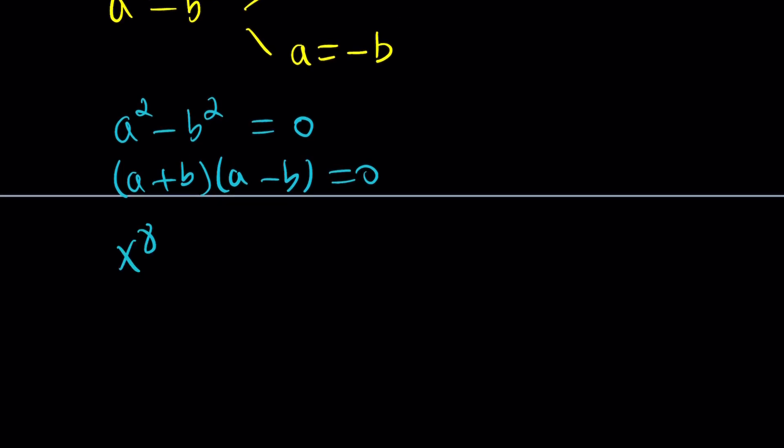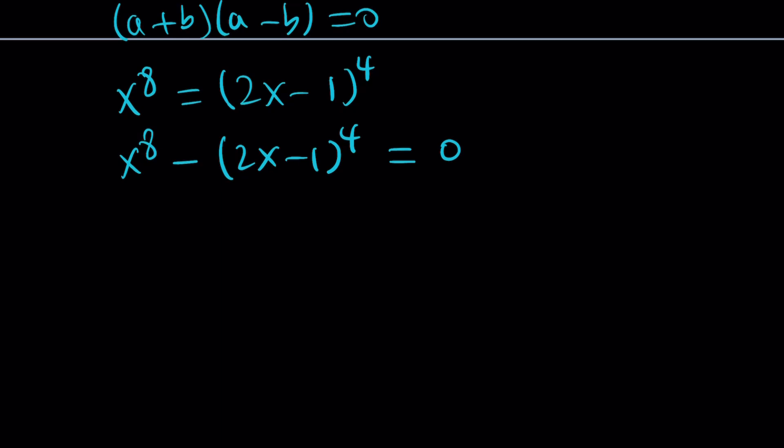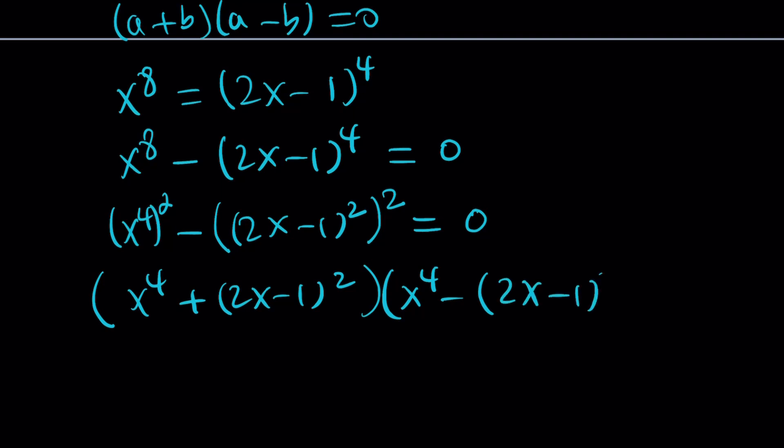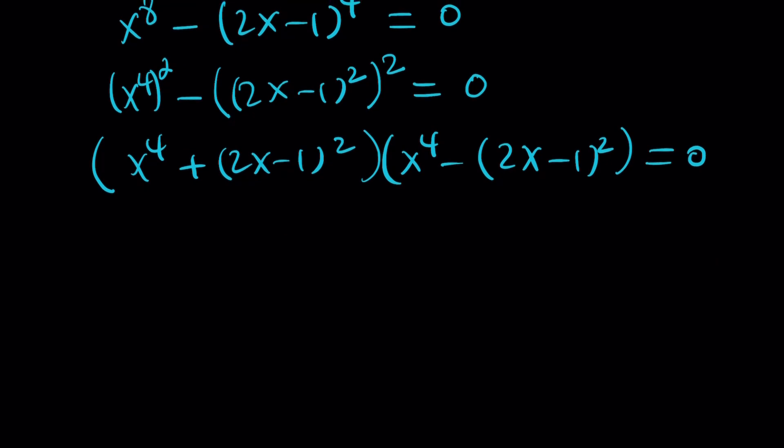So we had x to the eighth equals 2x minus 1 all to the fourth. Let's go ahead and turn this into a difference of two squares by subtraction. x to the eighth minus 2x minus 1 to the fourth equals 0. This is x to the fourth squared, and this is 2x minus 1 squared squared. So now it's a difference of two squares, and we can factor it as x to the fourth plus 2x minus 1 squared multiplied by x to the fourth minus 2x minus 1 squared, and set it equal to 0.